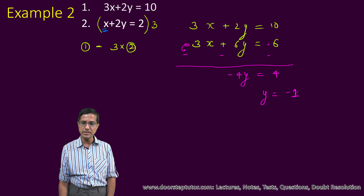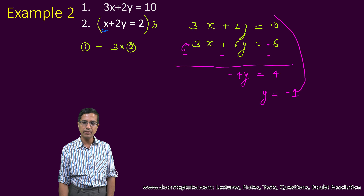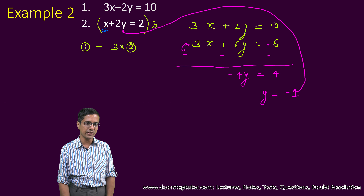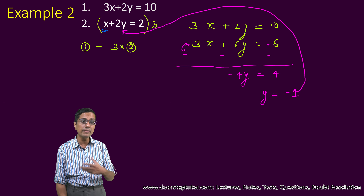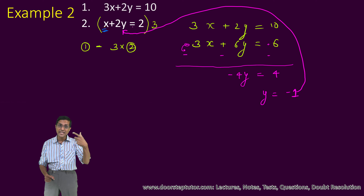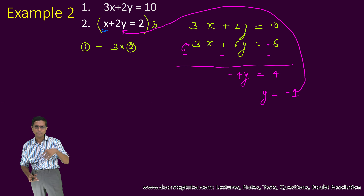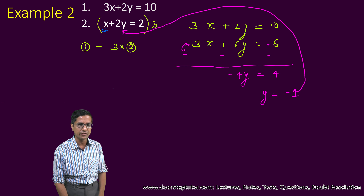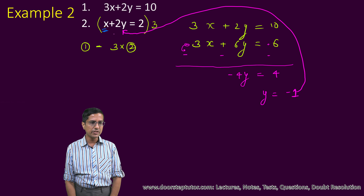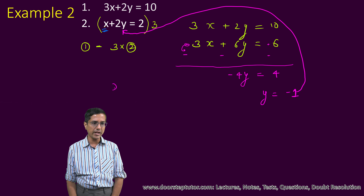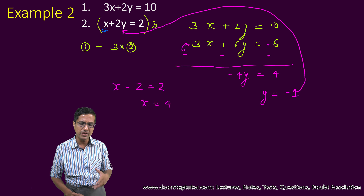Again, our preferred method is not to do another elimination to find x, but to substitute y in one of the equations. The second equation has only a single x, so it looks simpler — we will use that. Substituting y equals minus 1, this becomes x minus 2 is equal to 2, or x is equal to 4.